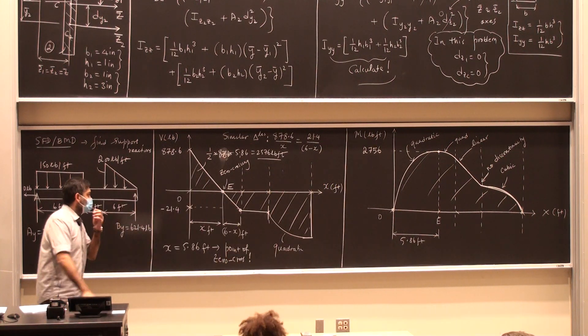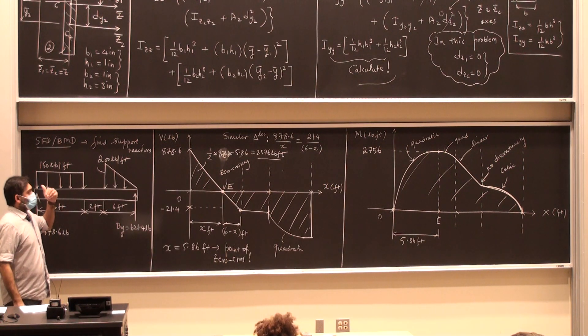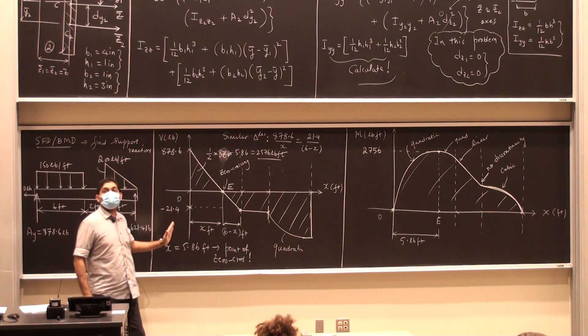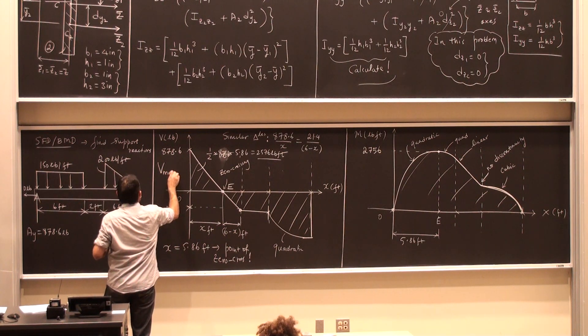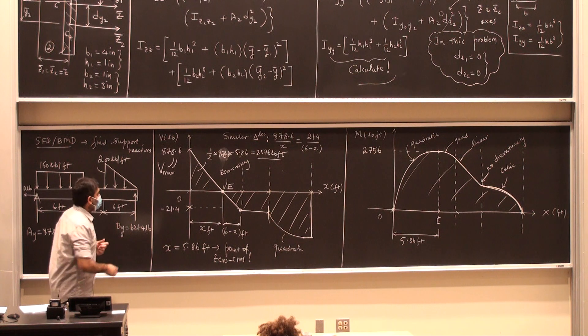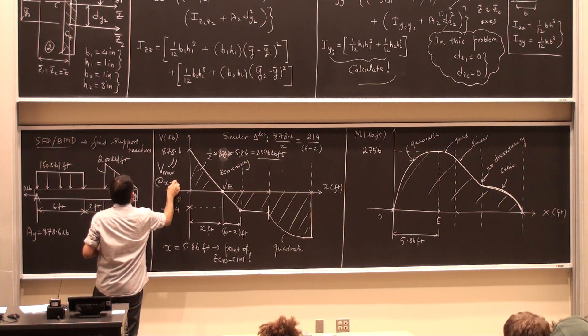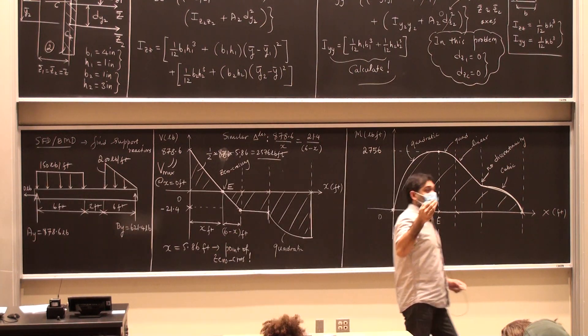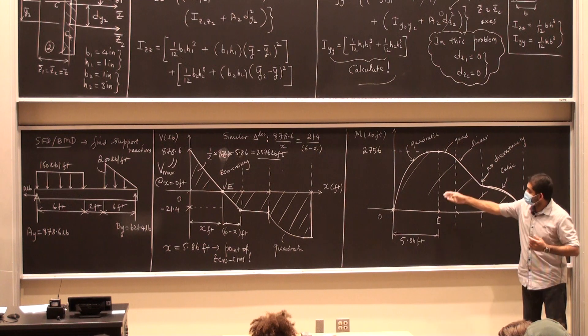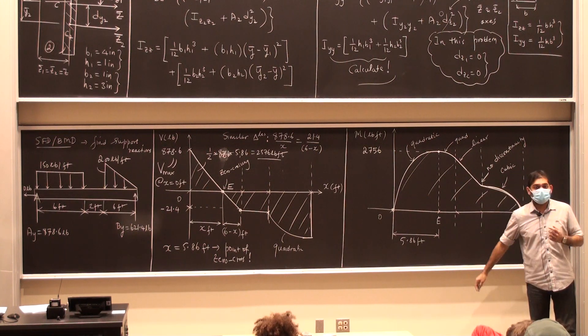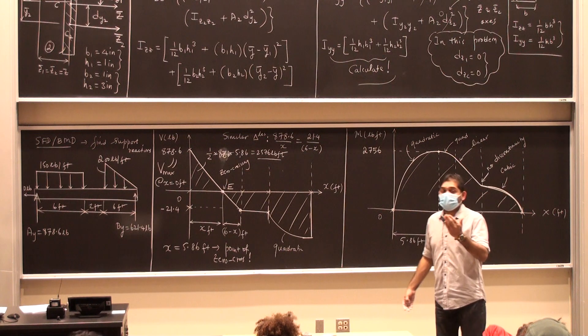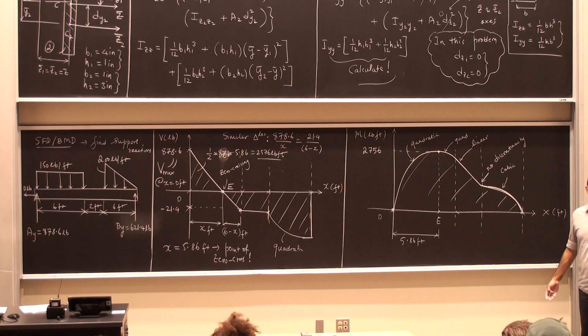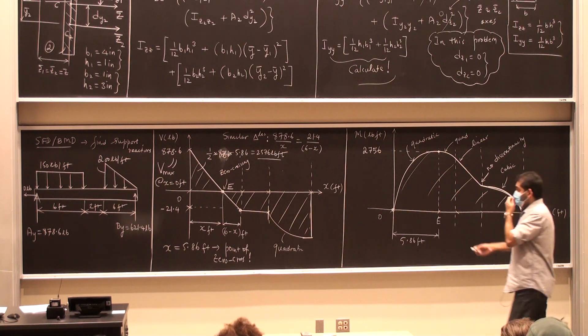And one very last thing before we leave. The maximum value of the shear force is 878.6 at x equals zero. V max is that value at x equals zero feet. Now what's this? The location of where the maximum bending stress occurs is not at x equals zero. It is actually at x equals 5.86 feet. So it is possible that if the beam is breaking, it could be breaking either at x equals zero location due to high shear stresses, or at x equals 5.86 due to high bending stresses.